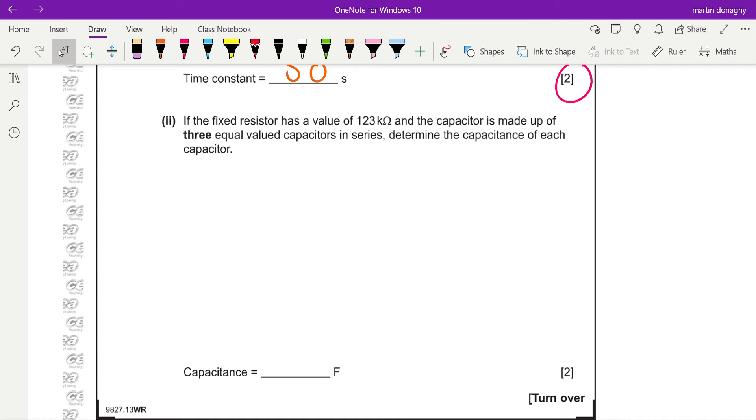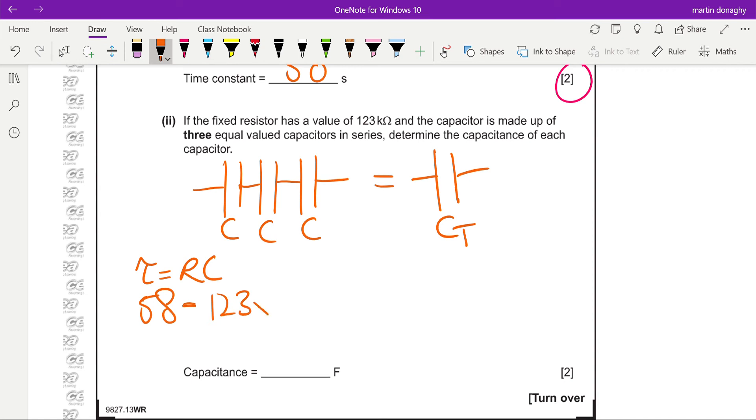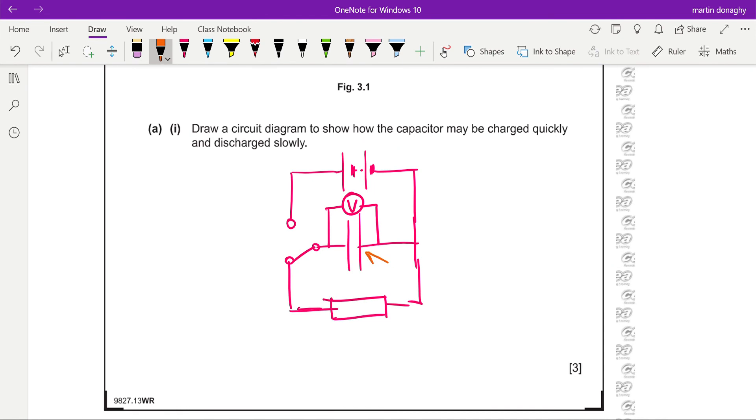Next part then says if the resistor has a value of 123 kilo-ohms and the capacitor is made up of three equal valued capacitors in series, determine the capacitance of each capacitor. So what we're saying is we have three equal capacitors in series, and we need to determine the capacitance - let's call that c and that c and that c - and that's equivalent to some total c_t. Now what we can tell is from the time constant above, tau equals RC, so we put in our value: 58 equals 123 by 10 to the 3 times c. So the capacitance in that circuit will be 58 divided by 123 to the power 3, which is let's say 472 by 10 to the minus 6 farads.